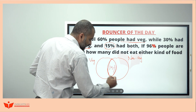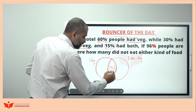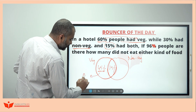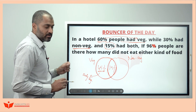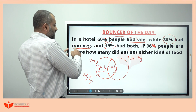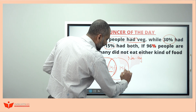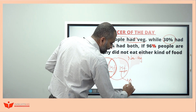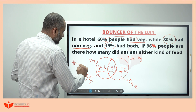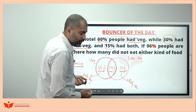60% had veg total; subtracting the 15% overlap, only veg is 45%. 30% had non-veg total; subtracting the 15% overlap, only non-veg is 15%. So people having one thing or the other: 45% plus 15% plus 15% equals 75%. Therefore, the people not having anything is 100% minus 75% equals 25%.